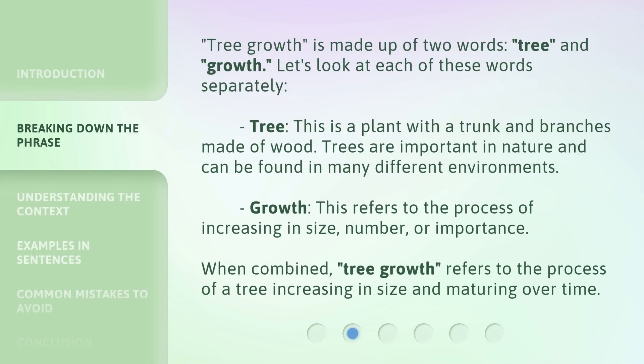Tree growth is made up of two words: tree and growth. Let's look at each of these words separately. Tree: this is a plant with a trunk and branches made of wood. Trees are important in nature and can be found in many different environments. Growth: this refers to the process of increasing in size, number, or importance. When combined, tree growth refers to the process of a tree increasing in size and maturing over time.